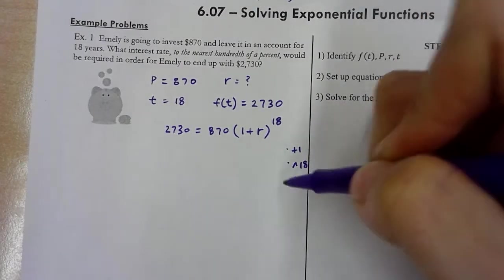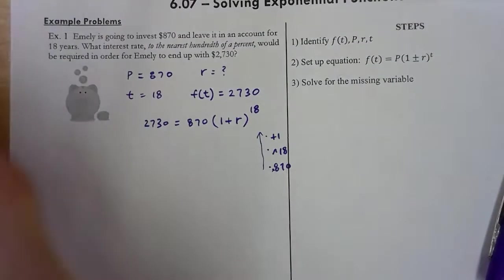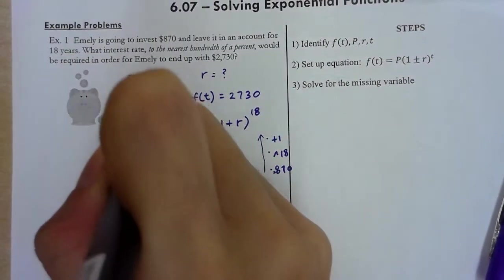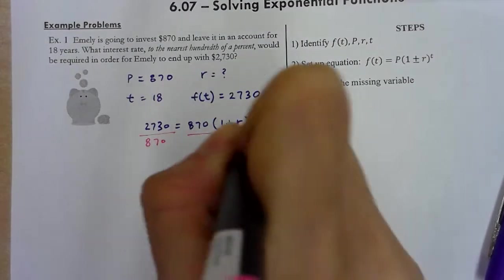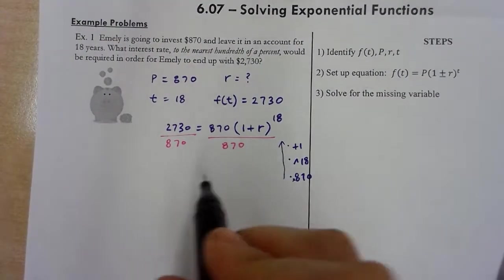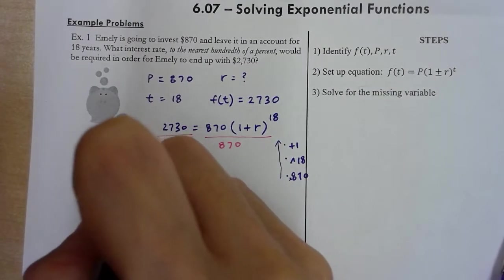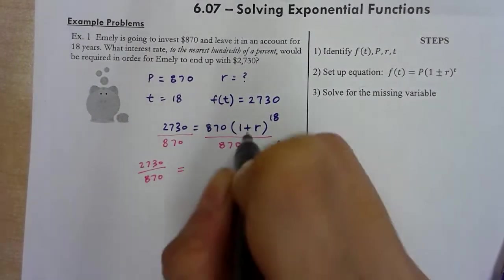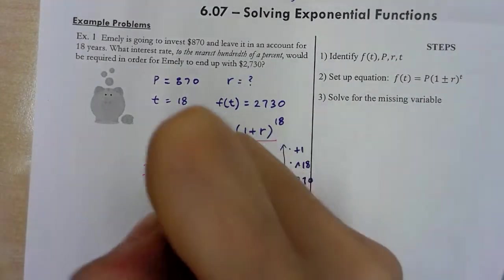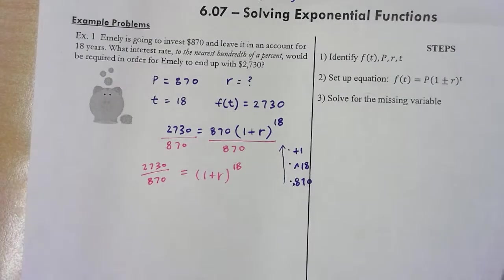So to undo multiply, I got to divide. I'll use the 3 powers. So then here, you'll be tempted to go to your calculator, but don't do that yet. So then here, it cancels out. I get (1 + r) raised to 18th.